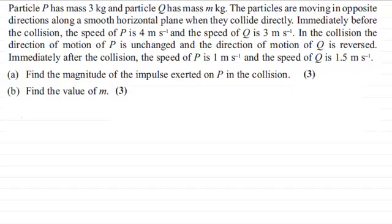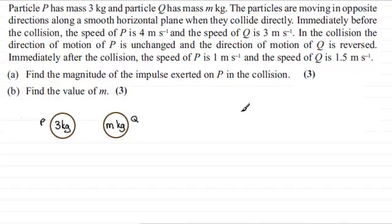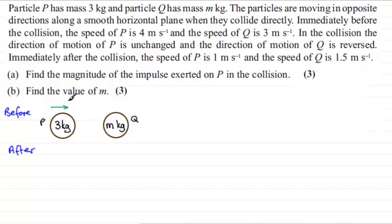First of all, I'd want to draw a sketch. We'll have our two spheres — 3 kilograms and m kilograms — where the 3 kg one is P and the m kg one is Q. We look at the motion before impact and after impact. We're told they are moving in opposite directions, so P is going at 4 m per second to the right and Q is moving to the left at 3 m per second.